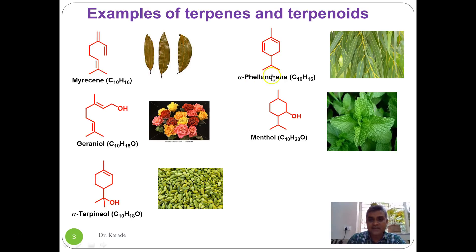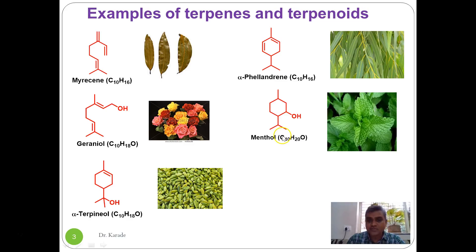The second example is alpha-phellandrene, a monocyclic compound containing two double bonds. It is a constituent of eucalyptus oil, which has medicinal importance. Geraniol is present in rose oil, alpha-menthol is present in the leaves of peppermint, and alpha-terpineol is present in the seeds of cardamom.